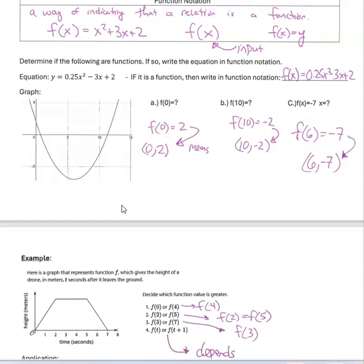The next one is basically saying: what is Y when X is 10? When you look at 10, it drops down to negative 2. So F of 10 equals negative 2, which would be the point (10, -2). The last one asks: if F of X equals negative 7, what is the X that makes this true? Looking at where the graph has a Y value of negative 7, the only time in this case is when X is 6. So F of 6 equals negative 7.